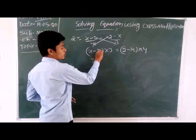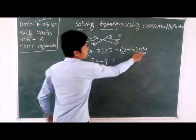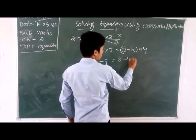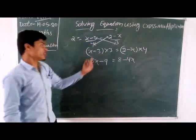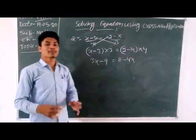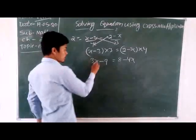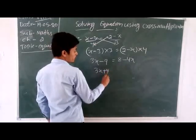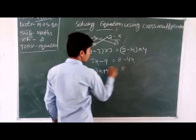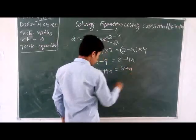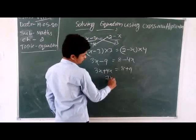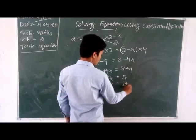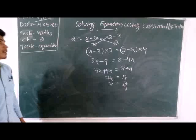So: 3 into (x minus 3) equals 4 into (2 minus x). That gives 3x minus 9 equals 8 minus 4x. Now we separate variables and numerals to each side. Transposing minus 4x to the left gives plus 4x, and transposing minus 9 to the right gives plus 9. So 3x plus 4x equals 8 plus 9, giving 7x equals 17, and x equals 17/7.